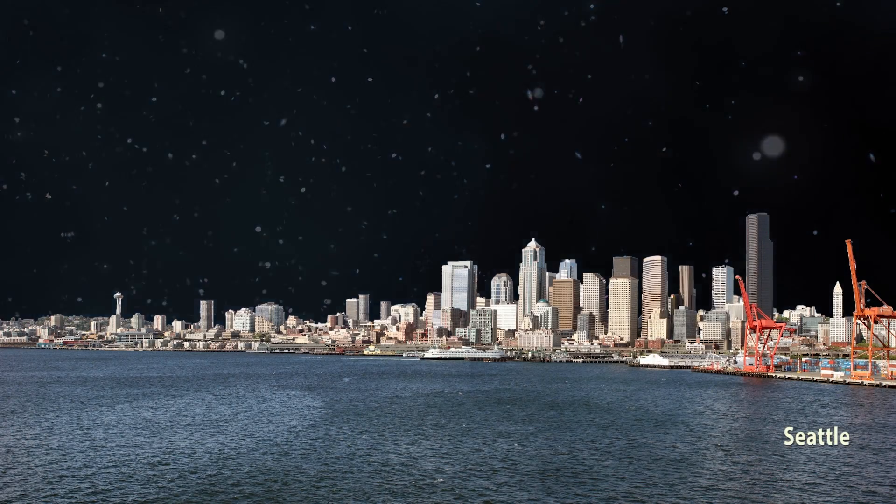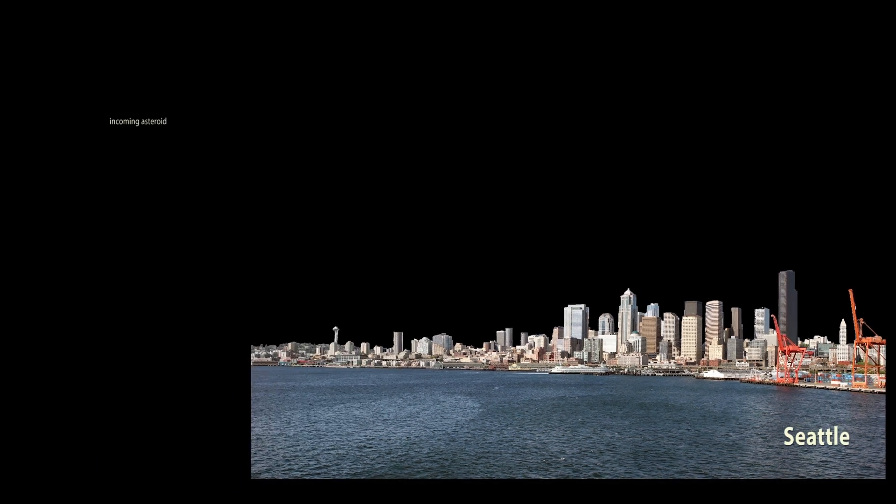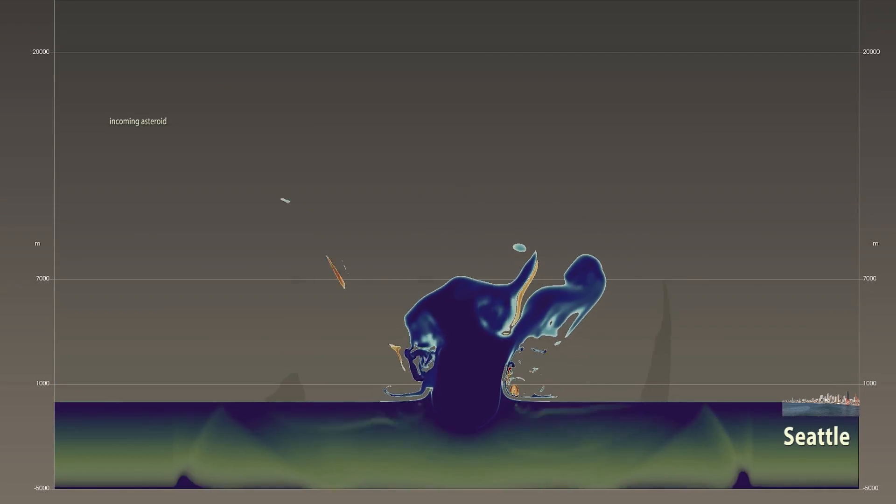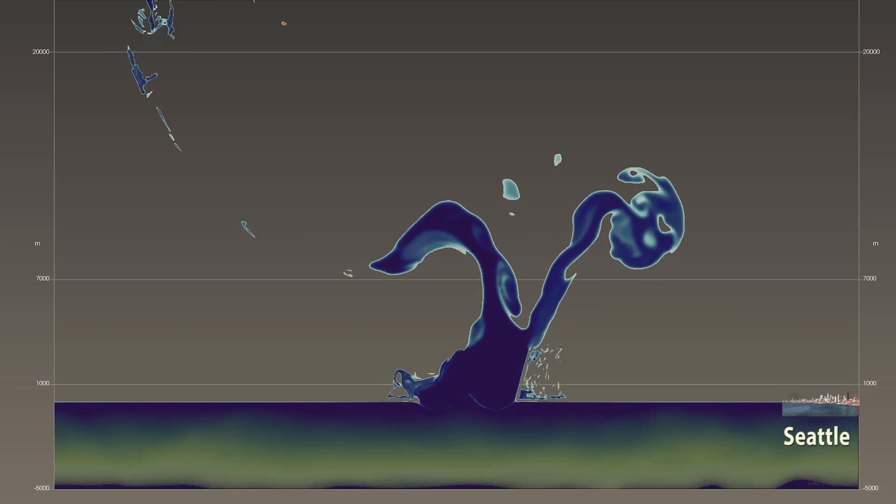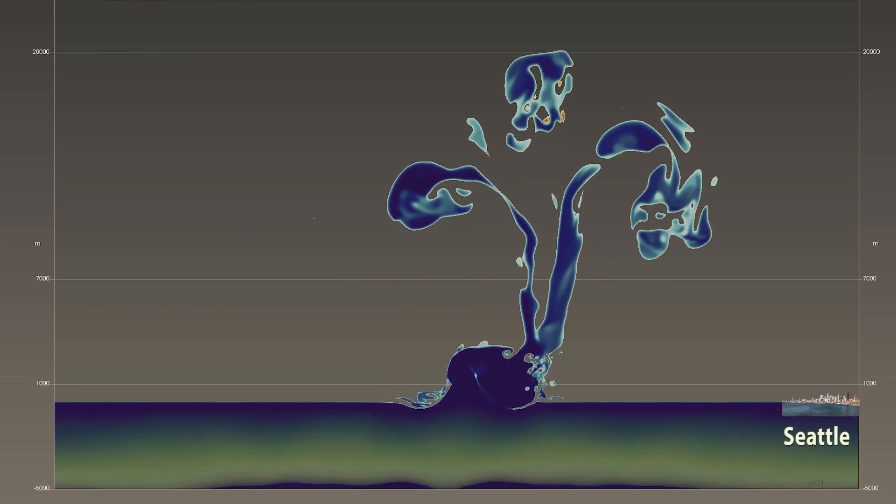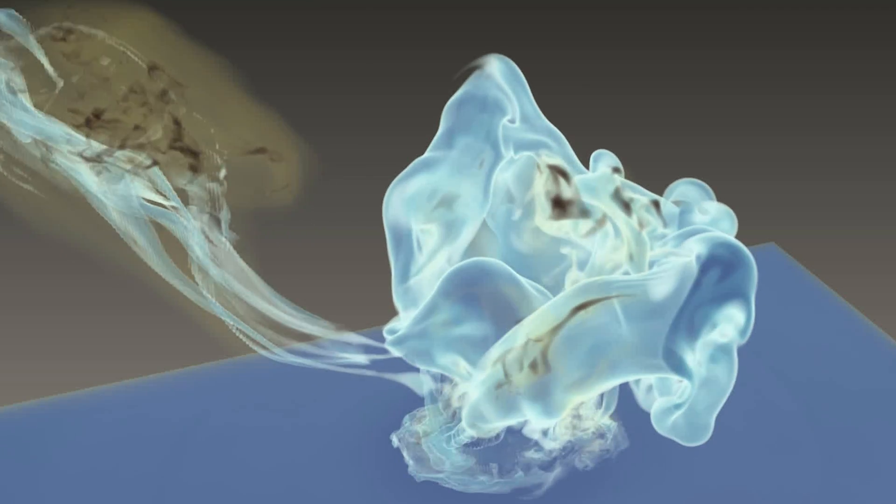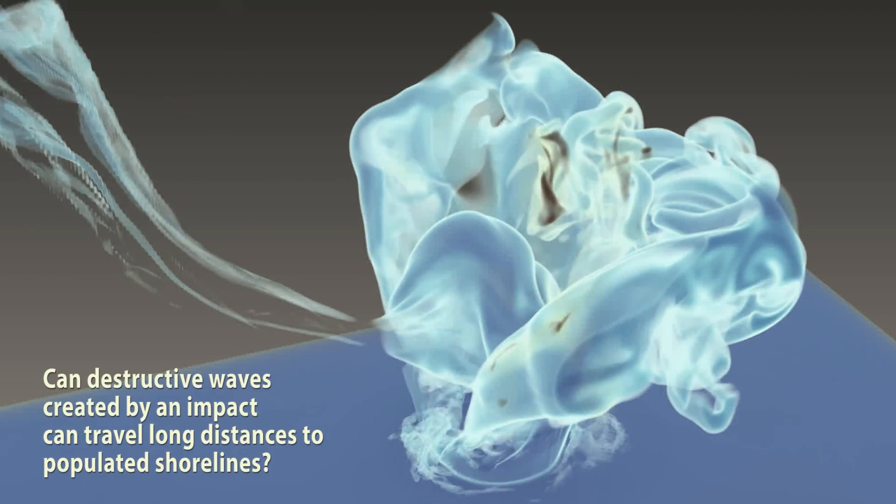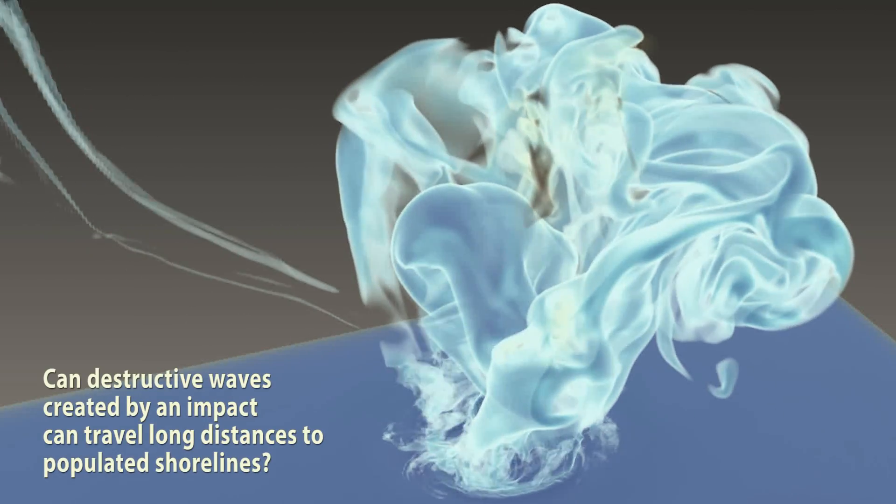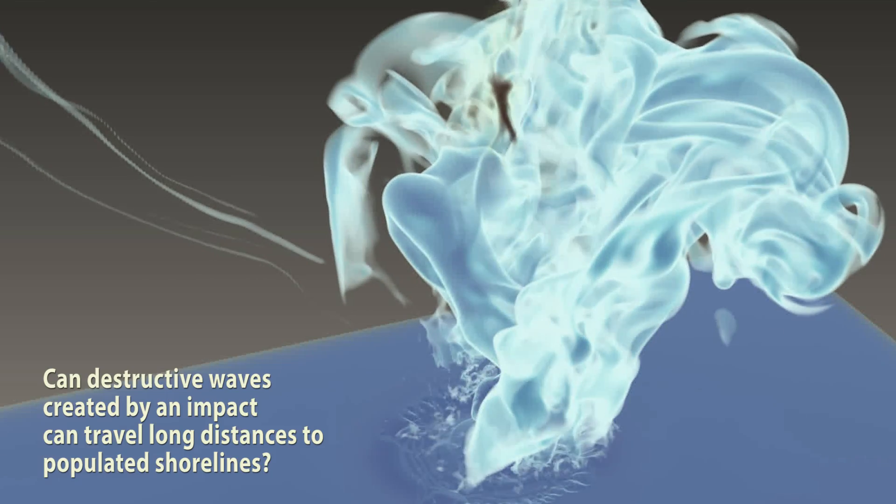An ocean impact within 10 to 20 kilometers of a populated coastline would be devastating, causing severe flooding, destructive shockwaves in the air, high temperatures, and hurricane-force winds. The threat from an ocean impact far from land is more difficult to assess. In particular, we want to know if destructive waves created by an impact can travel long distances to populated shorelines.